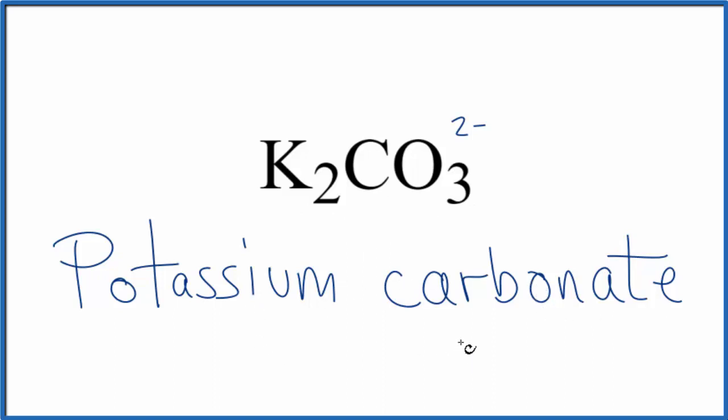If you're given the name and you need to write the formula for potassium carbonate, you know that this CO3 carbonate has this 2 minus ionic charge. Potassium on the periodic table, it's in group one, has a 1 plus ionic charge.